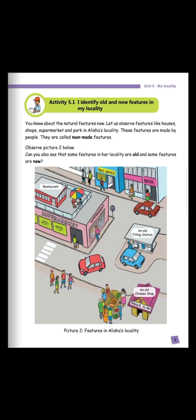Page 5 of the book. Activity 5.1: I identify old and new features in my locality. Old — vieux; new — des nouveautés. You know about the natural features now. Let us observe features like houses, shops, supermarkets, and parks in Alisha's locality. These features are made by people. They are called man-made features. C'est des personnes qui construisent tout ça, c'est pour ça qu'on les appelle man-made features.